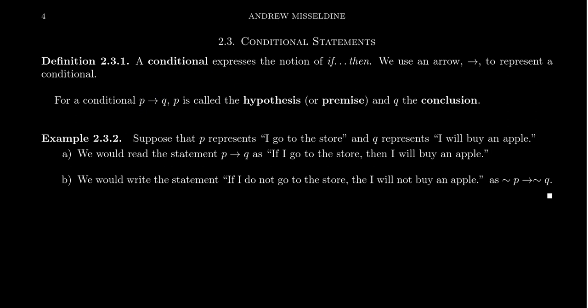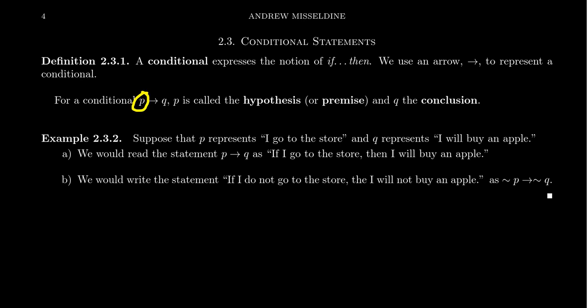As such, we need to distinguish between the first statement and the second statement. The first statement in a conditional is often referred to as the hypothesis — some people like to call it a premise. The second one is typically referred to as the conclusion; some people might call it a result. So we have our hypothesis that comes first and then our conclusion. The idea is: if we assume the hypothesis is true, then we conclude that the conclusion must be true.